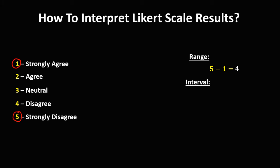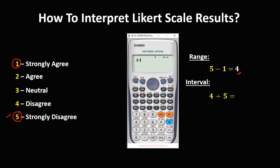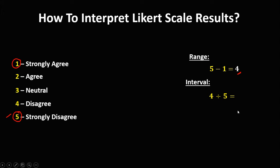Then from the range, we can find the interval. To solve for the interval, take the range, that's 4, divide by the highest number, that's 5. So 4 divided by 5 equals 0.80. The interval is 0.80.